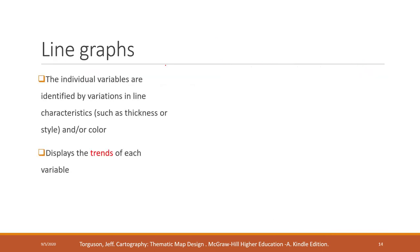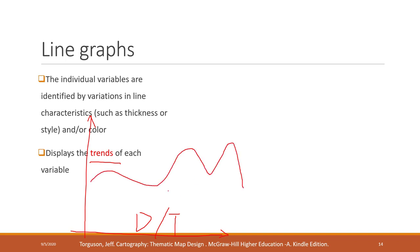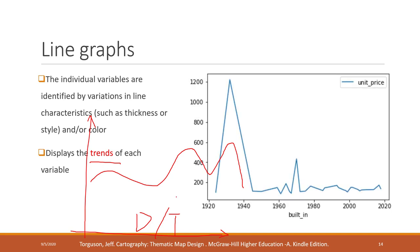A line graph is mainly used to show the trends of a variable over time. In most cases, the x-axis represents a date or time indicator, so you can see how a variable changes over different time periods. Here we have one example showing how the house unit price has changed over the past few years — there was a spike around 1930, another spike around 1970, and then prices kept lower after 2000.